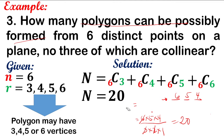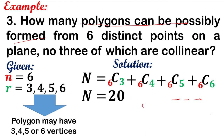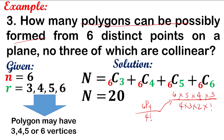For quadrilaterals: C(6,4) equals P(6,4) over 4 factorial. P(6,4) is 6 times 5 times 4 times 3. Over 4 factorial, which is 4 times 3 times 2 times 1. Cancel 4 and 3. Then 6 divided by 2 is 3, and 3 times 5 is 15. So C(6,4) is 15.